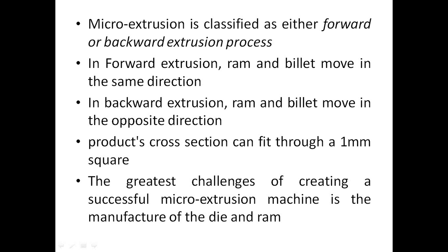In forward extrusion, the ram and billet move in the same direction. In backward extrusion, the ram and billet move in the opposite direction. The product's cross section can fit through a one millimeter square.